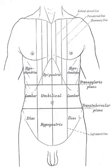Despite the right kidney lying one centimeter lower than the left — the right just below and the left just above the plane — to be practical, the surface markings are taken the same way. The hilum of the kidney on both the left and right is taken as 5 cm from the vertical midline and is on the transpyloric plane.